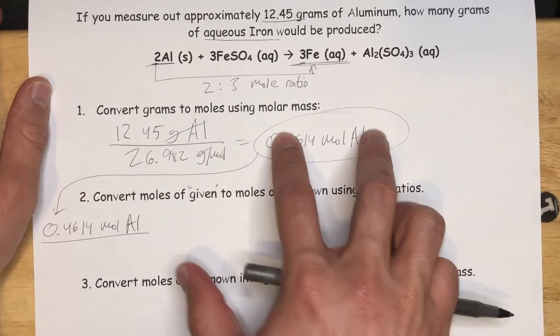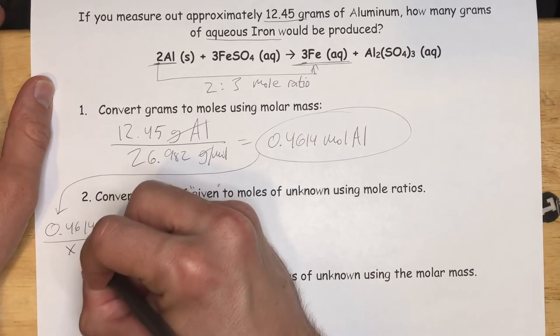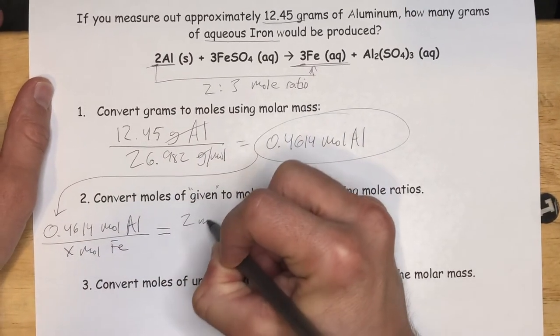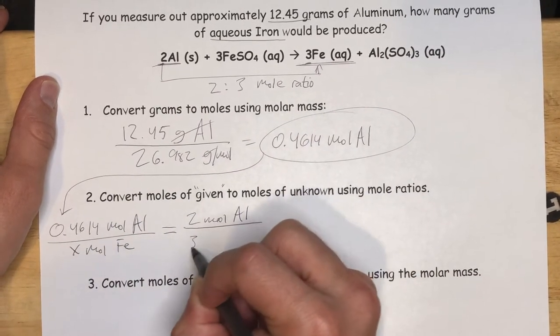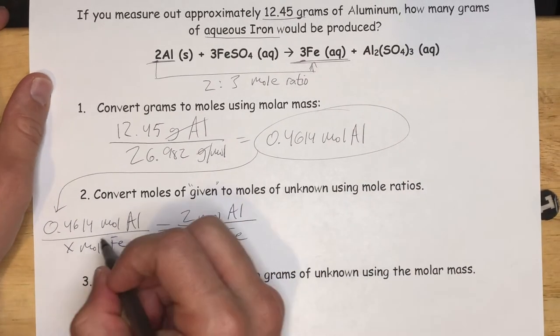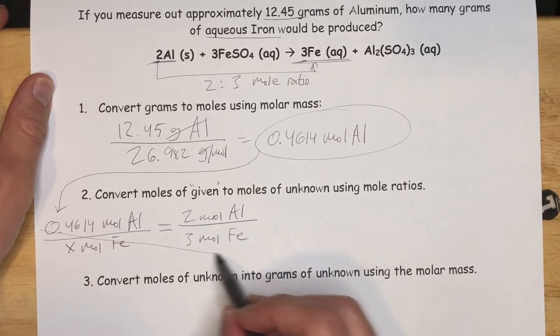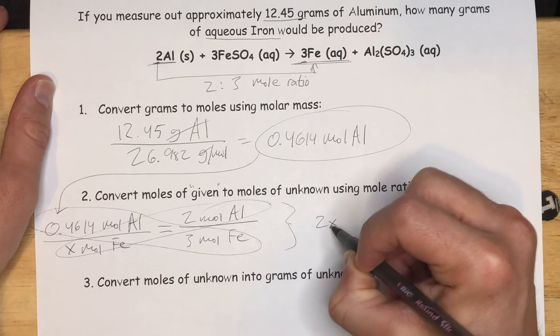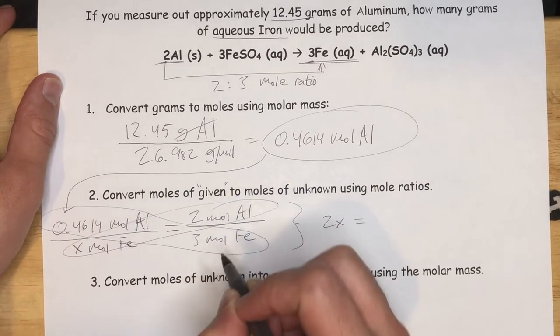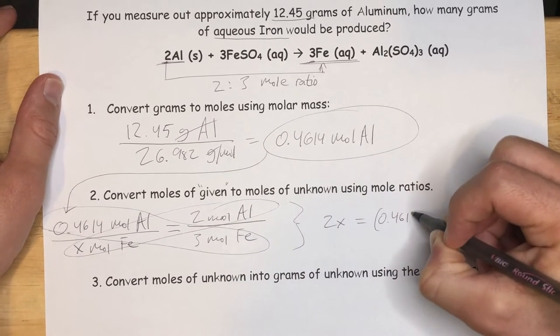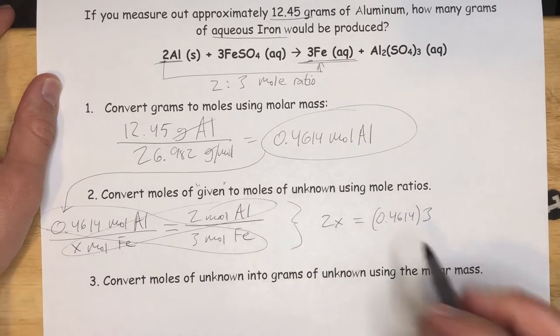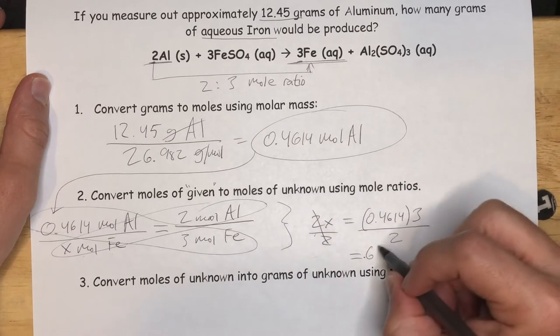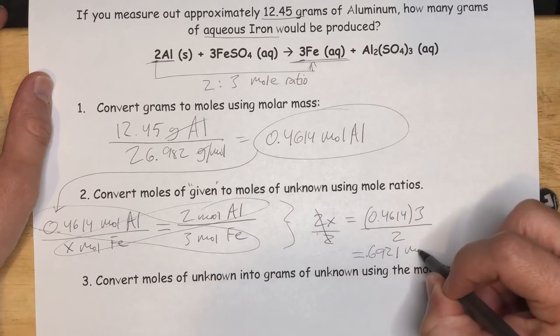So I tell students to set up a proportion like this. We're taking our answer from step one. We're going to put that over an unknown, an X. We're going to find this. But we're going to set this equal to what we do know about iron and aluminum. We know it's a two to three ratio. So it's two moles of aluminum for every three moles of iron. So with this, we can cross multiply to end up with two X equals 0.4614 times three. We get 0.6921 moles of iron.